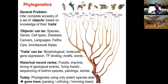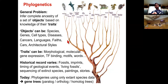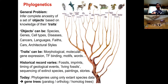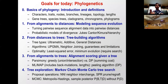Orthologous genes maintain the same function across two different species that have diverged — for example, two genes both coding for a calcium transporter. Paralogous genes are usually duplicated copies — if you have three transporters, they're paralogous to each other. Homolog is a more general term combining both paralogous and orthologous.